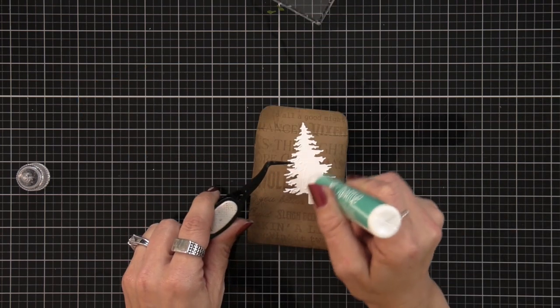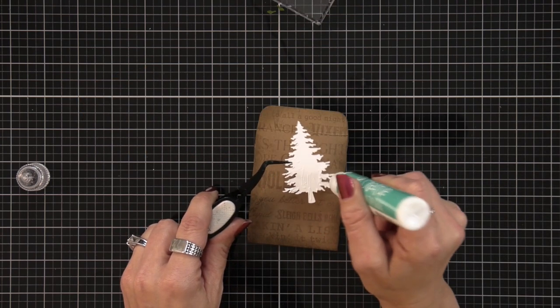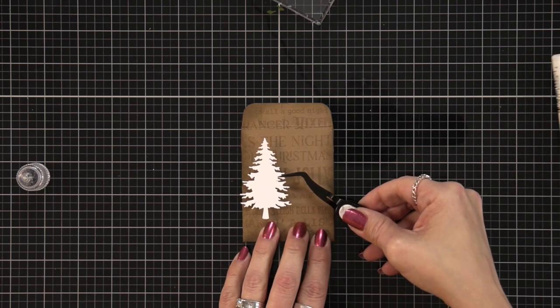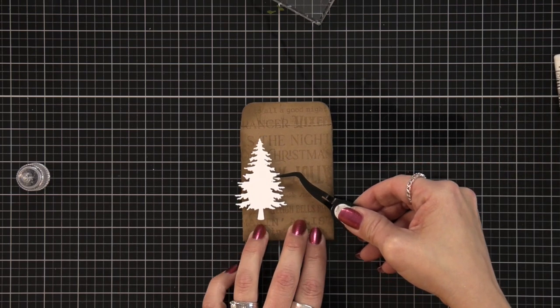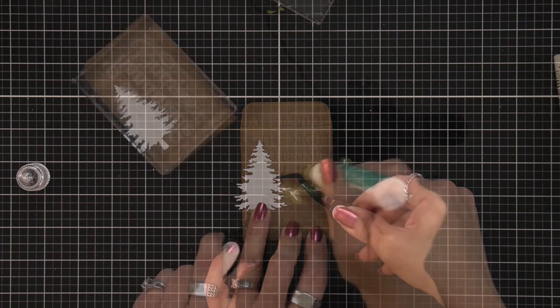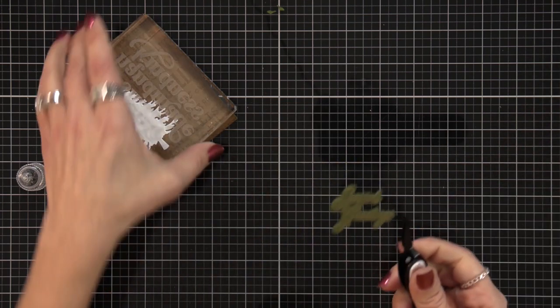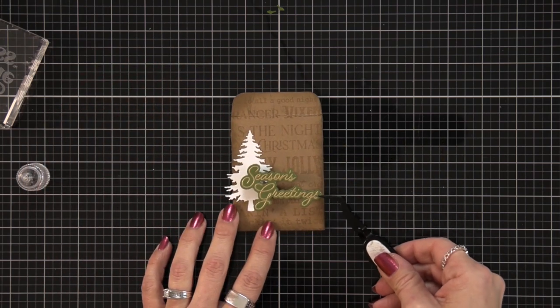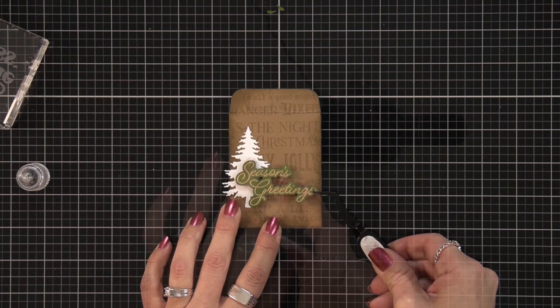Now I can finish off the front of this by adding my tree which I'm doing with my liquid glue. There is going to be a little bit of the tree that hangs off and I really like that look where it's hanging off of the edges. Then I'm going to add liquid glue to the back of my sentiment and add that on top as well and I like to place something heavy on it and let it sit for just a moment.